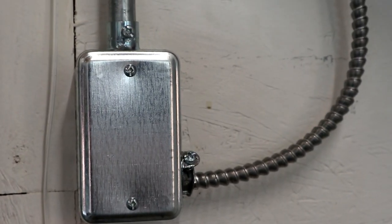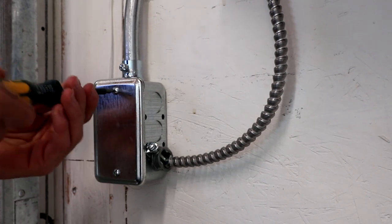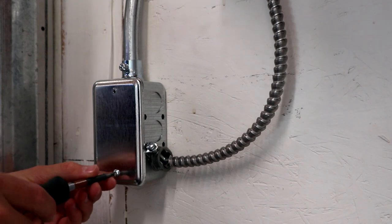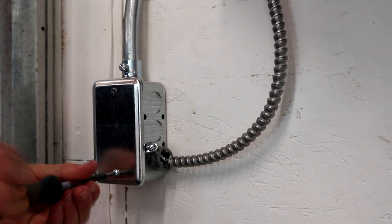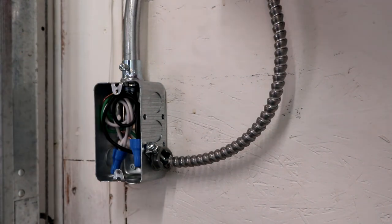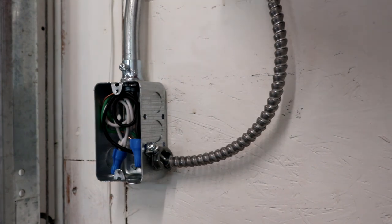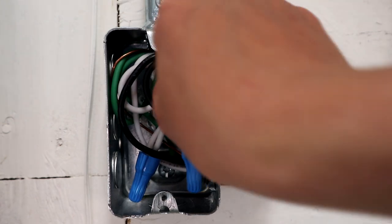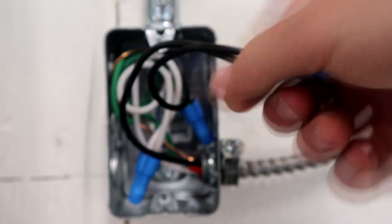We're going to begin by taking off this old cover plate. As you can see, we're now in the box, so we only need two of the wires, which is our two hot wires right here.